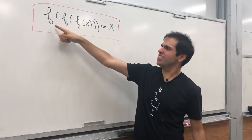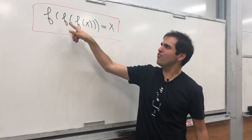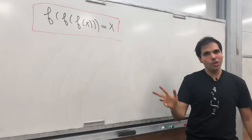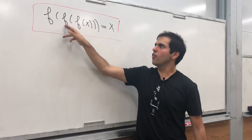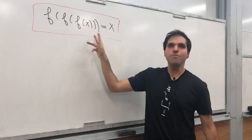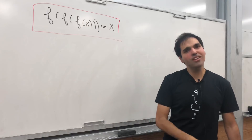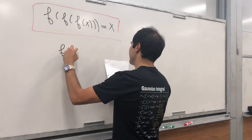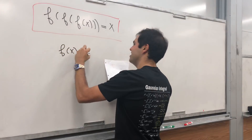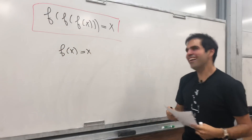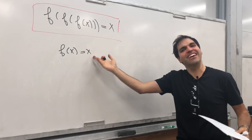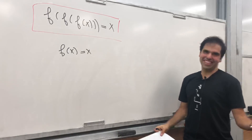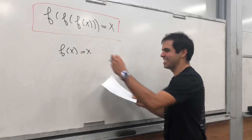Namely, are there functions such that f of f of f of x equals x? First of all, you may wonder why I went up to three powers. Because the first question — are there functions such that f of x equals x — well, there's only one function: the identity function. So it's not a very interesting question.